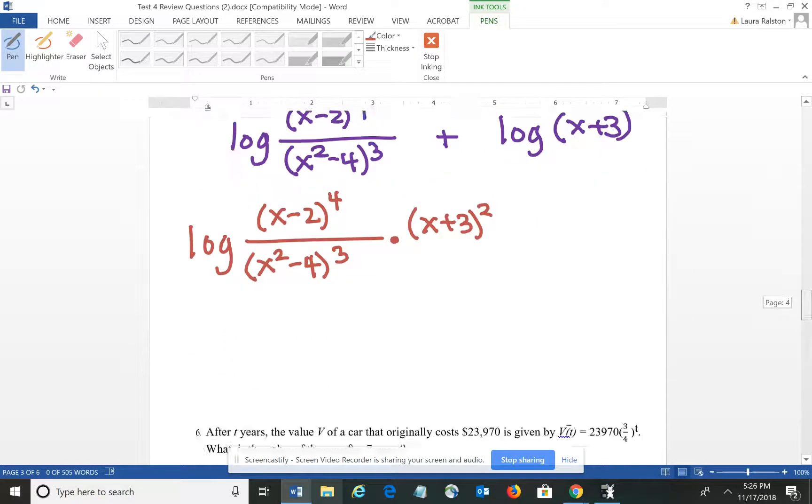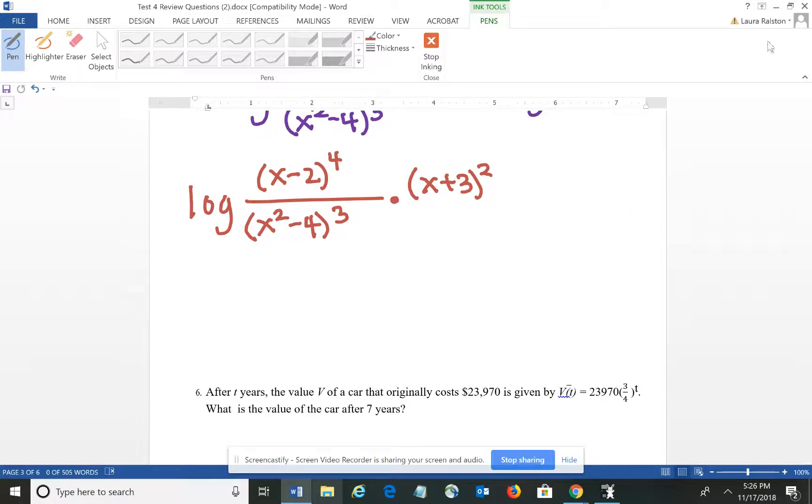And so when I do that and kind of simplify that expression a little bit, I end up with log of (x - 2) to the 4th times (x + 3) squared over (x² - 4) to the 3rd if you simplify it. And there it is written as a single logarithm.